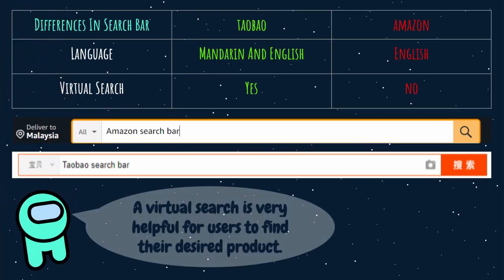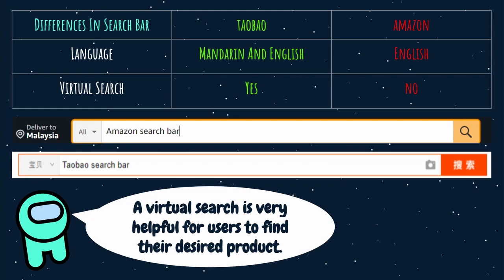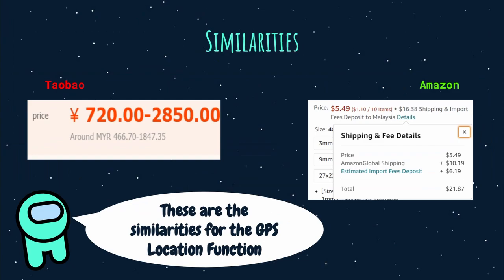One interesting difference is the usage of the search bar. Amazon's search bar can search in English and return results within seconds. Taobao has the ability to search in both English and Mandarin — you can search in English and results come back in Mandarin. Additionally, Taobao has a virtual search feature that allows users to insert an image to return product results, which is very useful for finding a product based on a photo.